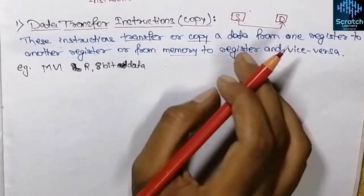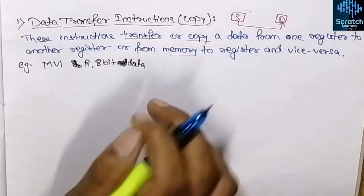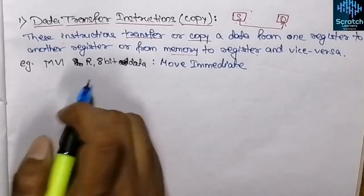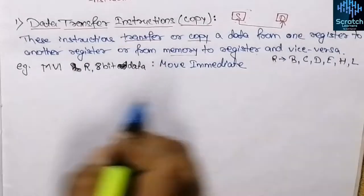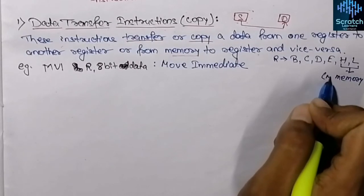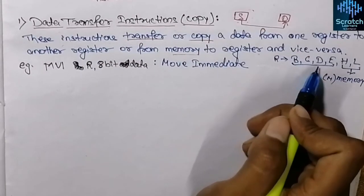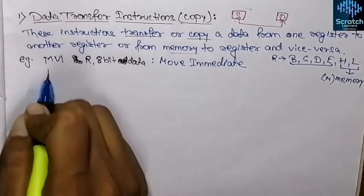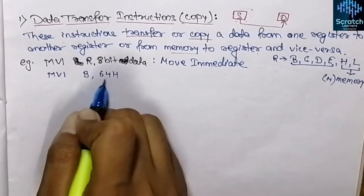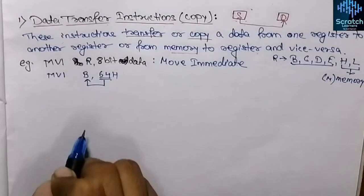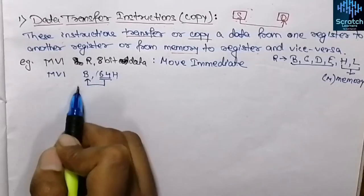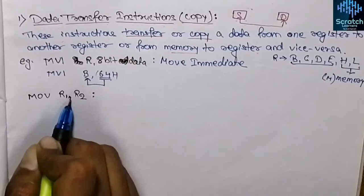The first data transfer instruction is MVI r, 8-bit data. MVI means move immediate, r is a register, and this is an 8-bit data. In 8085 the HL register pair is referred to as memory (M), so r here means B, C, D, or E. For example, MVI B, 64H will load the 8-bit data 64H into register B.